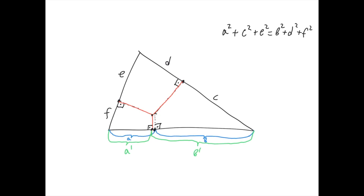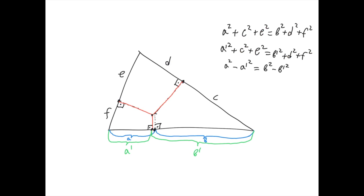We denote the new distances on that side by a' and b', while the originals remain a and b. From Carnot's theorem in the direction already proved, applied to the intersection point, we know that a'² + c² + e² = b'² + d² + f². Subtracting this from our given equation, c², e², d², and f² all cancel, leaving a² − a'² = b² − b'², which we rewrite as a² − b² = a'² − b'².